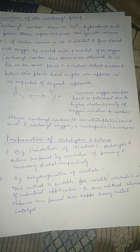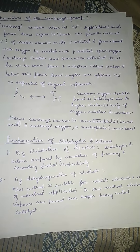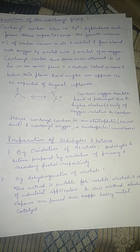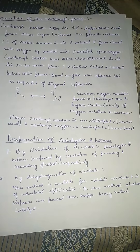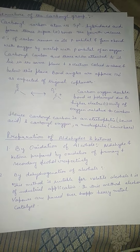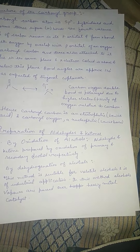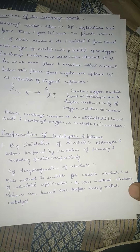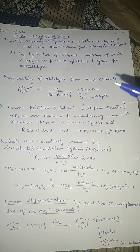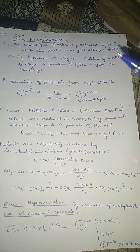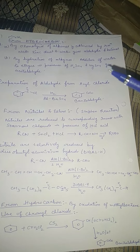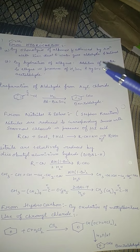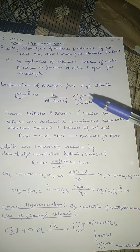Now coming to preparation of aldehydes. First, by oxidation of alcohols — aldehydes and ketones are prepared by oxidation of primary and secondary alcohols respectively. Second, by dehydrogenation of alcohols — this method is suitable for volatile alcohols and used in industrial applications, where alcohol vapors are passed over a heavy metal catalyst. Third, from hydrocarbons by ozonolysis of alkenes followed by reaction with zinc dust and water, giving aldehydes and ketones. Fourth, by hydration of alkynes — addition of water to ethyne in presence of H2SO4 and mercuric sulfate gives acetaldehyde.